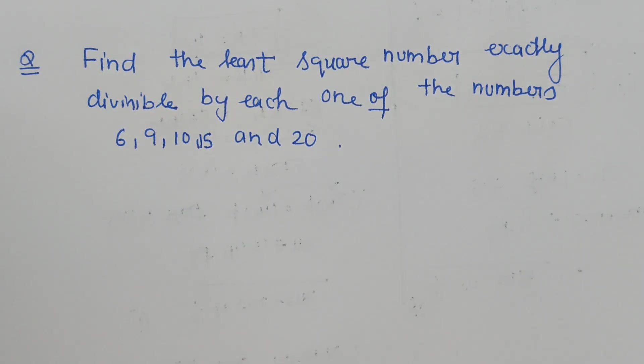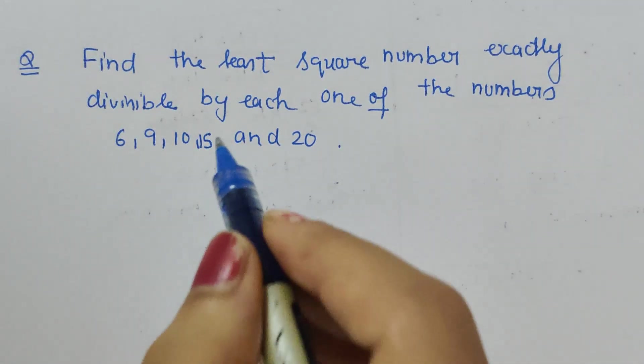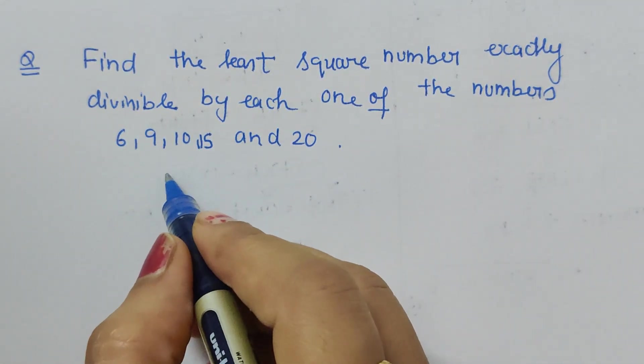Hello friends, here we have to find the least square number exactly divisible by each one of the numbers 6, 9, 10, 15, and 20. For problems of this type, we have to first find the LCM.